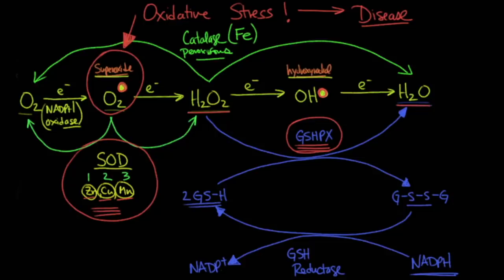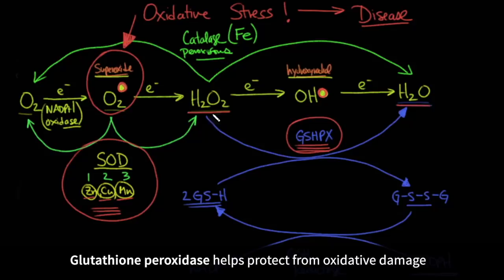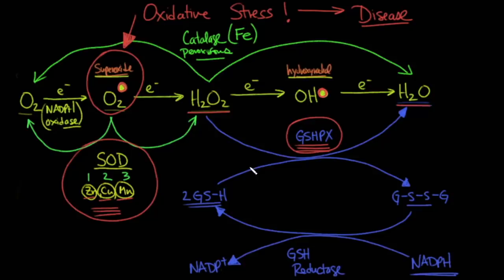The body's defense mechanisms include superoxide dismutase, which converts the superoxide form into hydrogen peroxide and oxygen. There's also catalase, which converts hydrogen peroxide into oxygen and water. And then there is glutathione peroxidase. Notice that glutathione peroxidase takes glutathione in its reduced form and reduces the hydrogen peroxide into water, while glutathione itself becomes oxidized into a disulfide bond. The sulfide attached to the hydrogen is the reduced form, and the sulfide attached to another sulfide is the oxidized form.